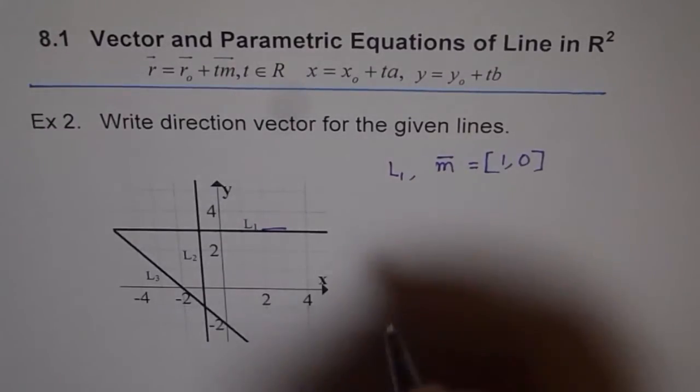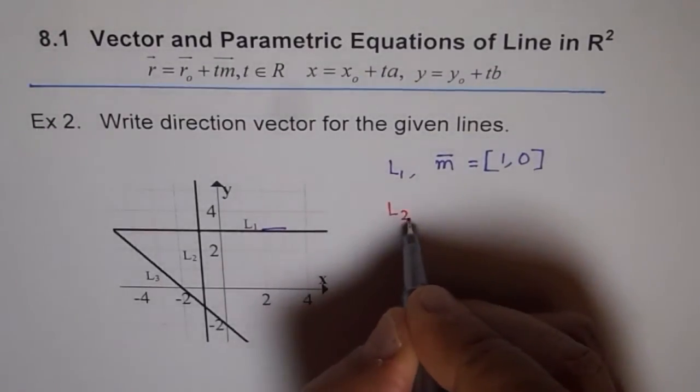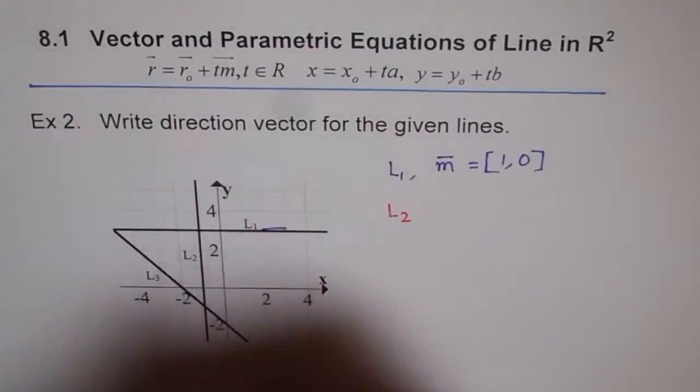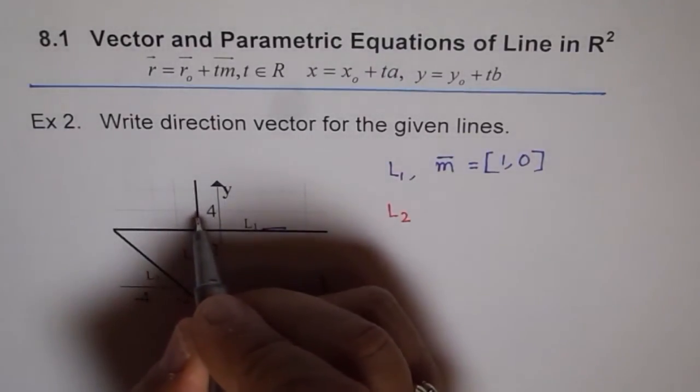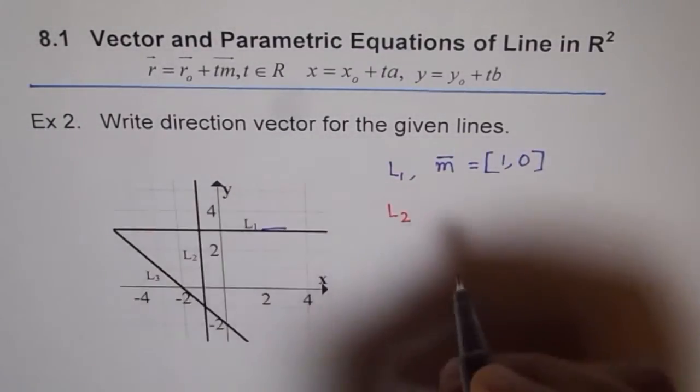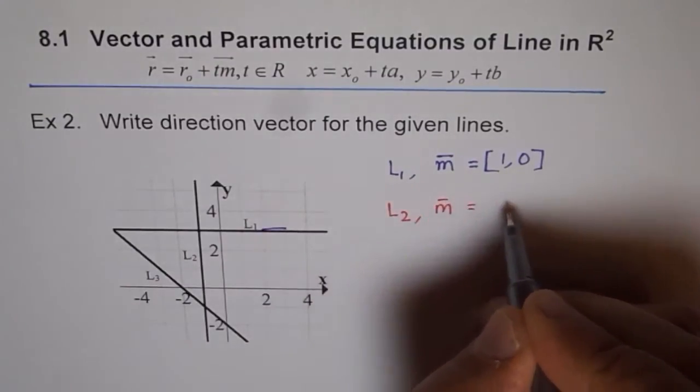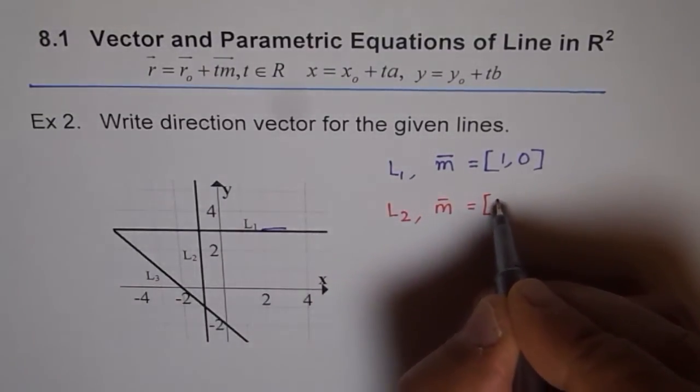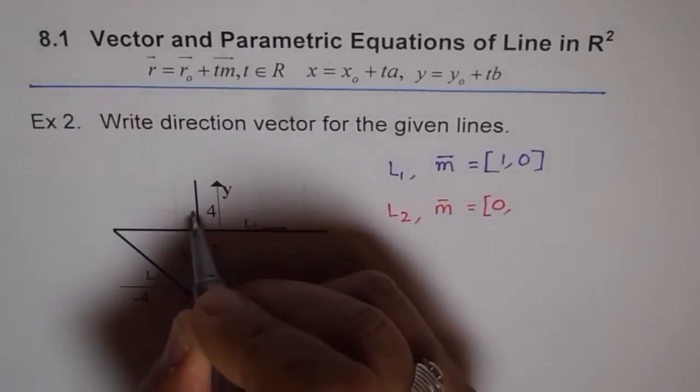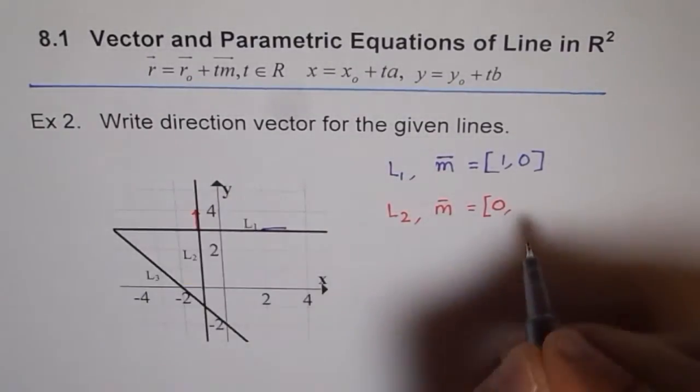Let's go to line 2. Line 2 is the vertical line. Here, as you can see, you don't really move left or right. So we can say m here is equal to, change in x is 0. But y value changes, let's say 1 unit. So we say [0, 1].